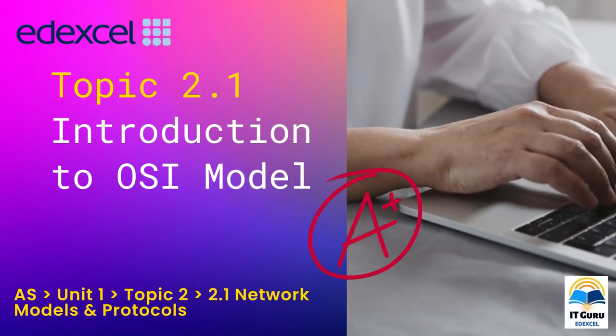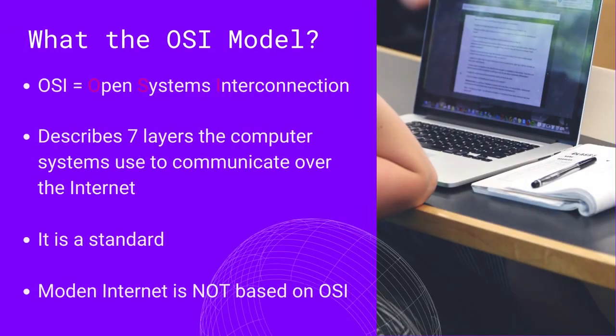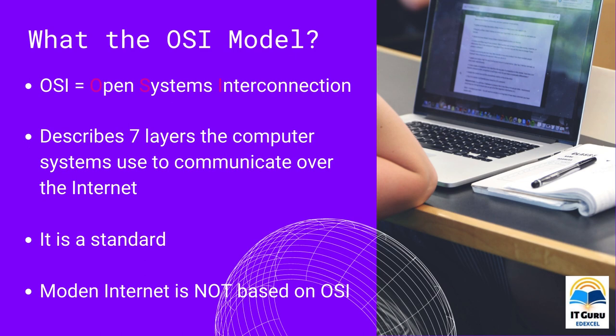Starting off, let's see what is the OSI model. The word OSI is an acronym for Open Systems Interconnection. The OSI model — meaning the Open Systems Interconnection model — is a conceptual model created by the International Organization for Standardization. It provides a common basis for the coordination of standards development for the purpose of system interconnection. This conceptual framework describes the functions of a networking system. It is a reference model and a standard prescribed for all parties dealing with interconnections to follow.